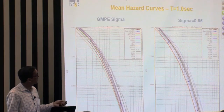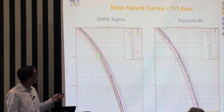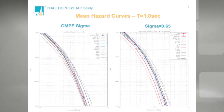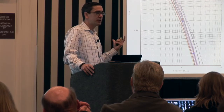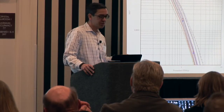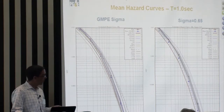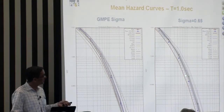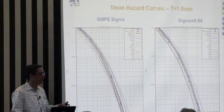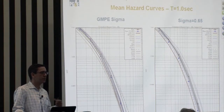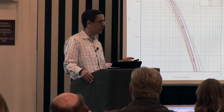Just to show similar plots for one second: on the left you have the full median and sigma values of each individual model; on the right you've got the fixed sigma value of 0.65. This is a wider distribution in hazard curves than we saw for PGA — something we're seeing when running these models. The BINDI model at one second with the fixed sigma of 0.65 is coming into the distribution, so its median values for one hertz are not as low relative to the other models.